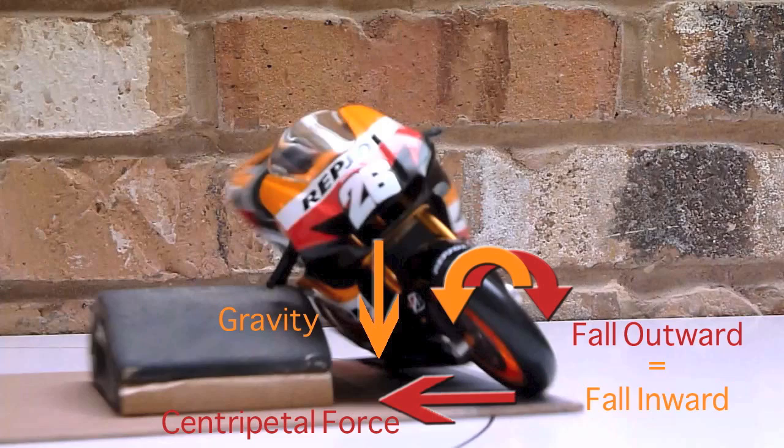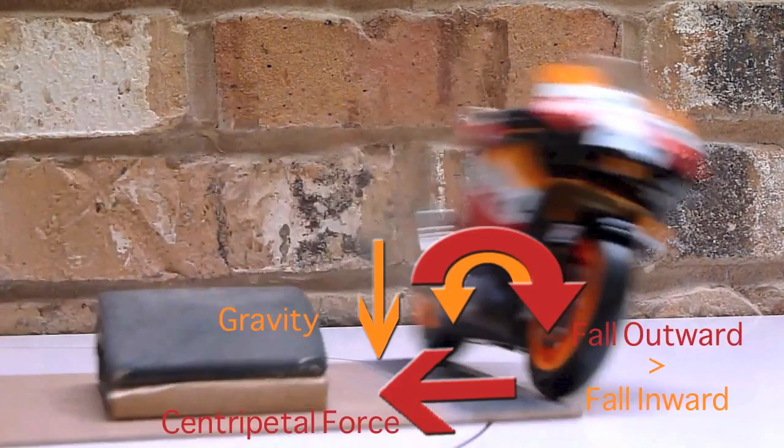Given your speed and tightness of turn, there is a naturally stable angle of lean. If you are not leaning in enough for your cornering speed, the centripetal force will overcome gravity and will throw the bike out of the turn.